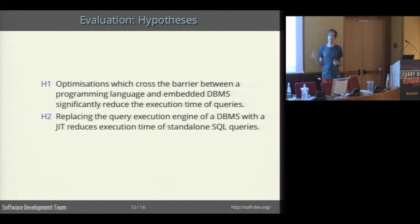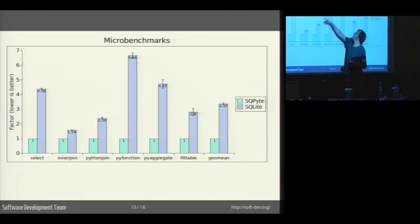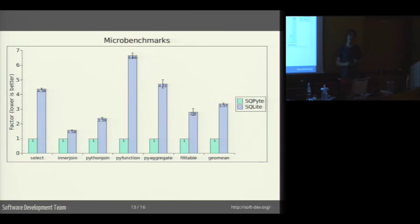So to address the first hypothesis, we wrote a number of Python benchmarks that are just small Python programs that run a query and then consume the results. And all the queries are rather small. What you see here is basically the speed up that SQLPyT, which is the JIT implementation that is able to inline across the language layers into SQLite. And you see that depending on the benchmark, there are speed ups between 60% faster and almost six times faster. And the mean of the speed ups is about three times. So that's nice. So hypothesis one is looking pretty good here.